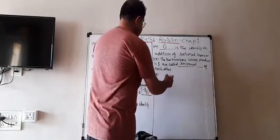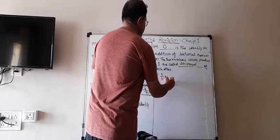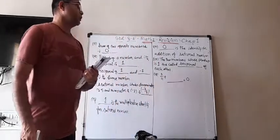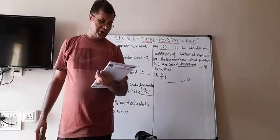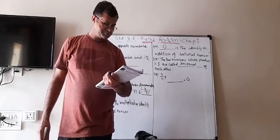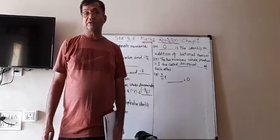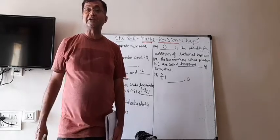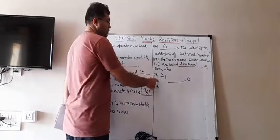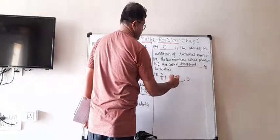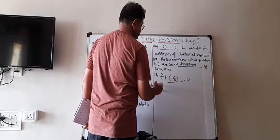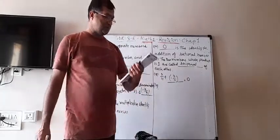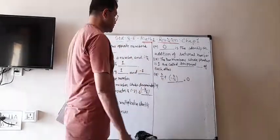Number 18. 3 upon 11 plus blank is equal to 0. When can the sum be 0? When it is the additive inverse. So what is the additive inverse of 3 upon 11? That is minus 3 upon 11. So: 3 upon 11 plus minus 3 upon 11 is equal to 0.